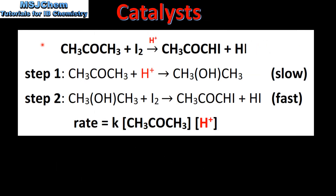Finally, we look at catalysts and reaction mechanisms. Here we have an equation for the iodination of propanone, which occurs in the presence of an acid catalyst. In a chemical reaction, a catalyst is neither a reactant nor a product, therefore it's written above the arrow in the chemical equation.